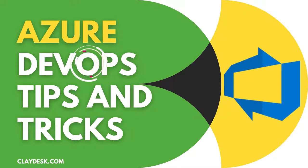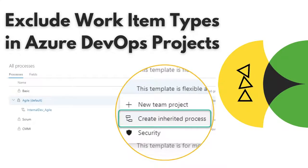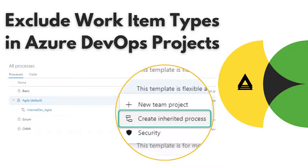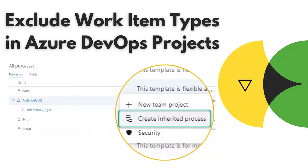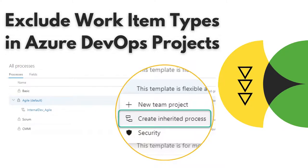The first tip I'm going to talk about — I'm going to cover about eight of them. The first is excluding work item types in Azure DevOps projects. You can actually exclude work item types by simply enabling or disabling them based on business need or your requirements. For any Azure DevOps project, you can keep only work item types which make sense for your project, and simply exclude the rest by hiding them.